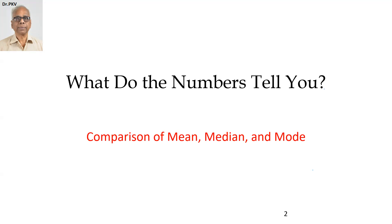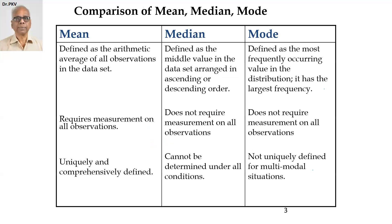Dear friends, in this video we will make a comparison of the three measures of central tendency: mean, median, and mode. Arithmetic mean is defined as the sum of all observations divided by the number of observations — it is the arithmetic average of all observations in a data set. Median is the middlemost observation when the data set is arranged in ascending or descending order. Mode is that value which occurs most often, the largest frequency of occurrence.